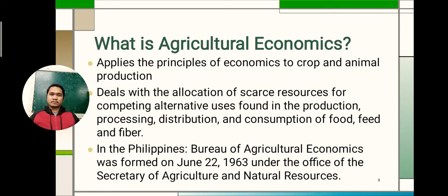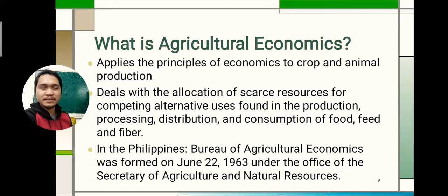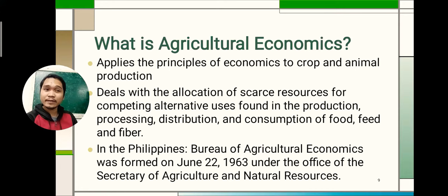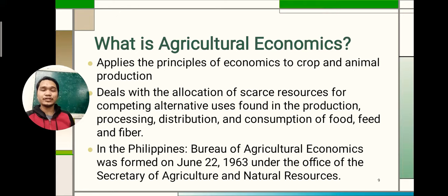So that was general economics, but what is agricultural economics? There are many kinds of economics — managerial economics, business economics, and others. Agricultural economics applies the principles of economics to crop and animal production, and it deals with the allocation of scarce resources for competing alternative uses found in the production, processing, distribution, and consumption of food, feed, and fiber. In the Philippines, the Bureau of Agricultural Economics (BAE) was formed on June 22, 1963, under the Office of the Secretary of Agriculture and Natural Resources.